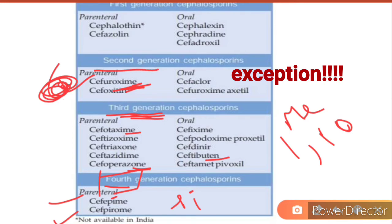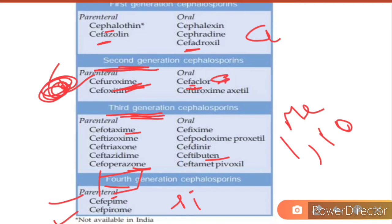Cefuroxime belongs to the second generation. Coming to the first generation, they have 'A' after 'cef': cephalexin, cefadroxil, cefazolin, cephalothin — except cefaclor. Remember this: cefaclor also has 'A' after 'cef', but it belongs to the second generation. So the two exceptions are cefuroxime and cefaclor.